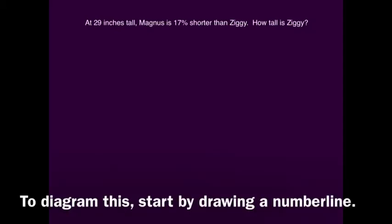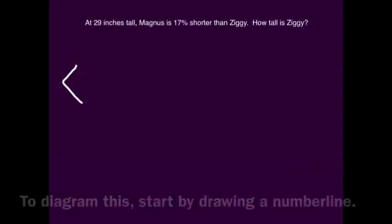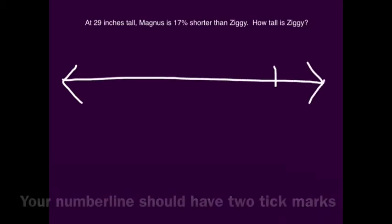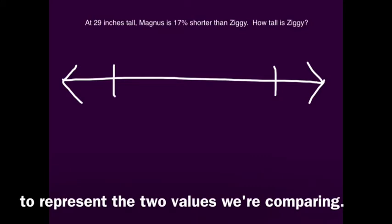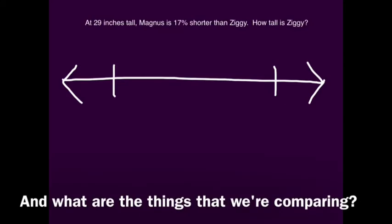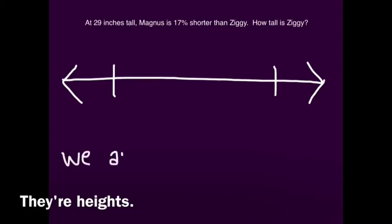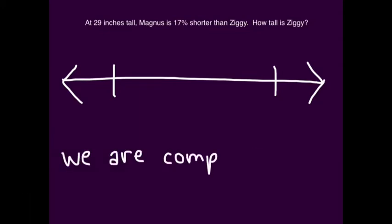To diagram this, start by drawing a number line. Your number line should have two tick marks to represent the two values that we're comparing — we are comparing heights.